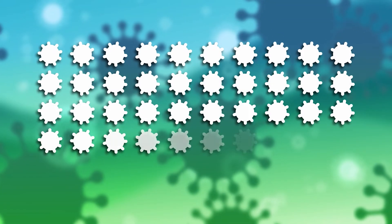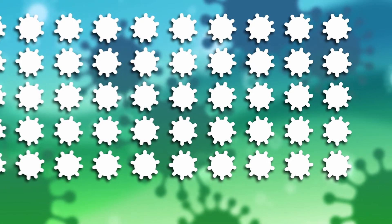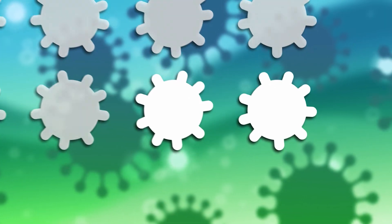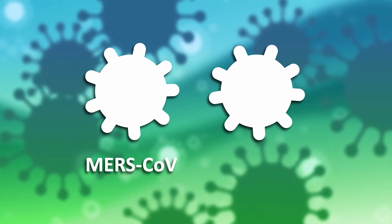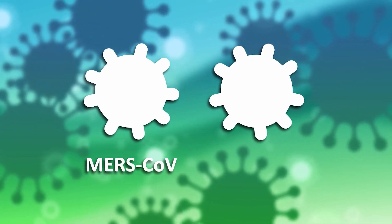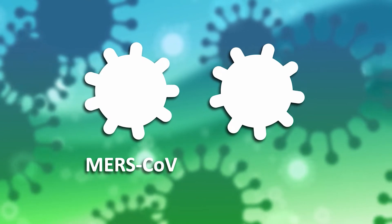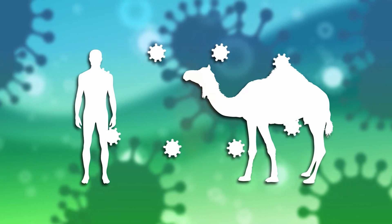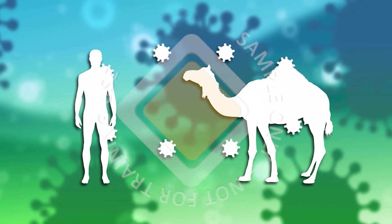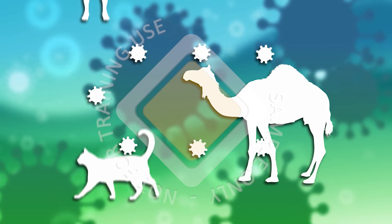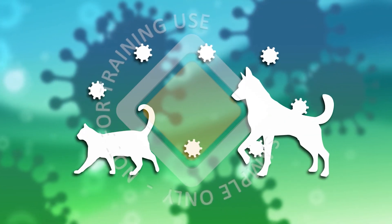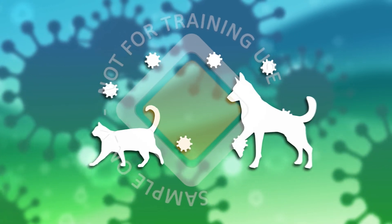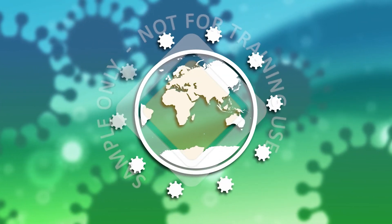Coronaviruses are a large group of viruses that can cause illnesses ranging from the common cold to more severe diseases, such as Middle East Respiratory Syndrome and Severe Acute Respiratory Syndrome. Coronaviruses can be transmitted between animals and people. Several known coronaviruses are circulating in animals that have not yet infected humans. As a family, coronaviruses are common across the globe.